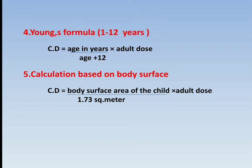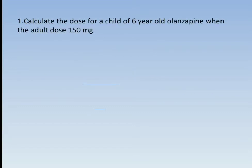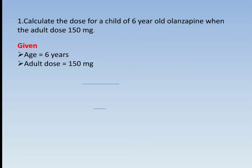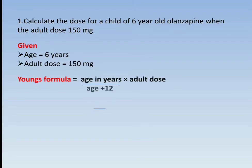The first question: Calculate the dose for a 6-year-old child for olanzapine when the adult dose is 150 mg. Given: Age = 6 years, Adult dose = 150 mg. We solve this using Young's formula: Child dose = (Age × Adult dose) / (Age + 12) = (6 × 150) / (6 + 12) = 900 / 18 = 50 mg.